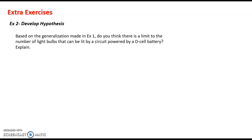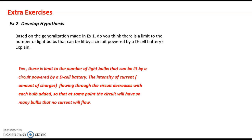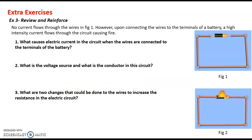This means that if you keep on adding more and more light bulbs, we will reach a point at which the current flowing through the circuit decreases until it reaches zero. So yes, there is a limit to the number of light bulbs that can be lit by a circuit powered by a D-cell battery. The amount of current decreases with each bulb added, so at some point the circuit will have so many bulbs that no current will flow.